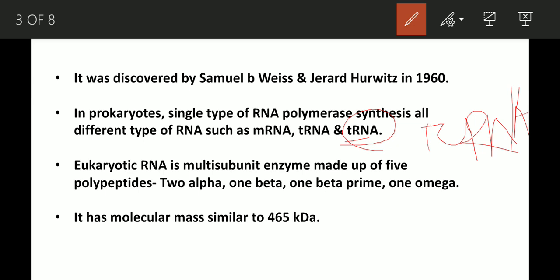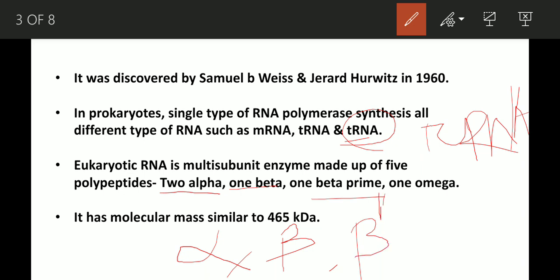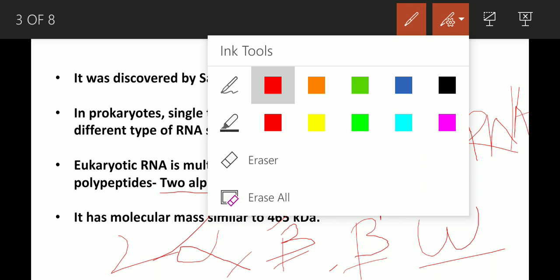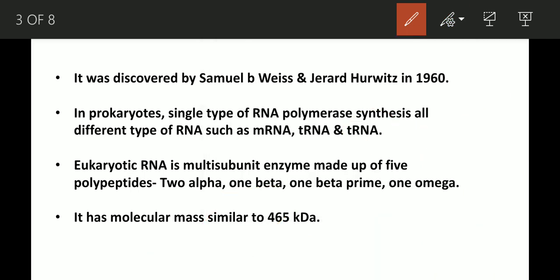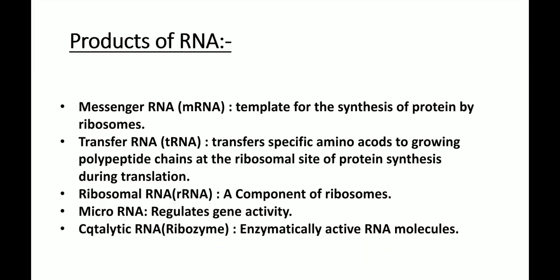Eukaryotic RNA polymerase is a multisubunit enzyme made of 5 polypeptides — alpha, beta, beta-prime, omega — and has a molecular mass of approximately 465 kDa.